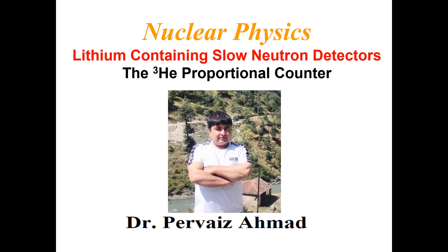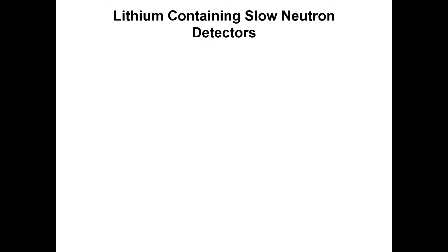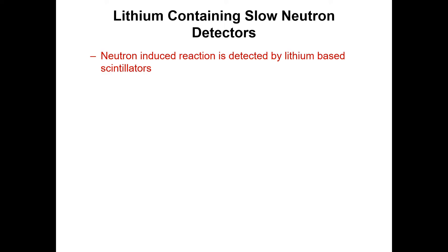Hello again, I'm Dr. Purves Ammar. In today's lecture we will talk about two kinds of radiation detectors. We will talk about lithium-containing slow neutron detectors and then we will talk about helium-3 proportional counters. So let's start with the first one, that is lithium-containing slow neutron detectors.